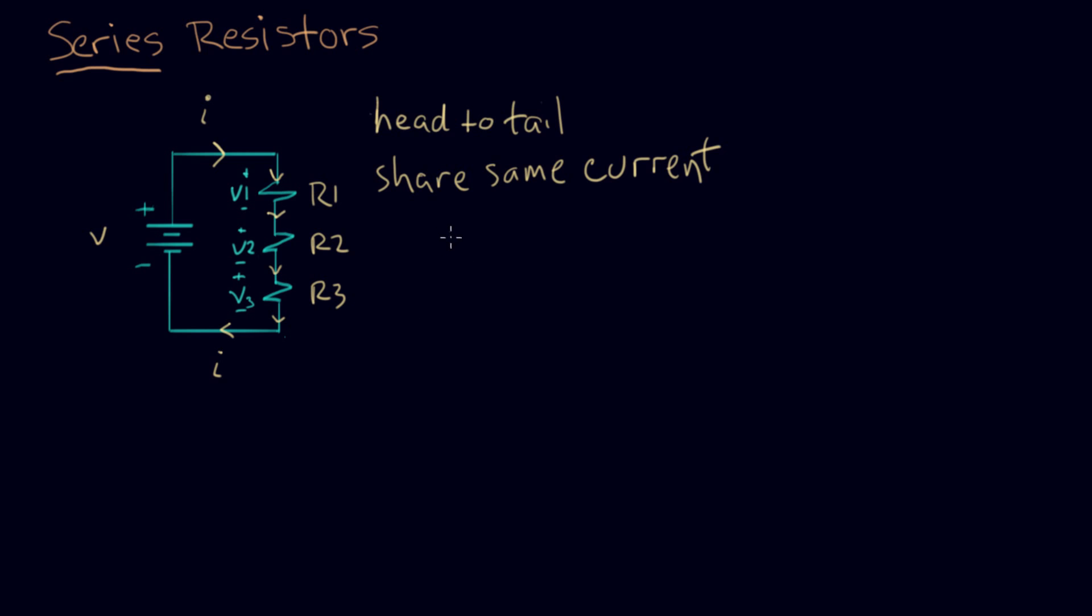So we make some observations. We have Ohm's law, our friend Ohm's law. And we know that means V equals I times R for any resistor. That sets the ratio of voltage to current.